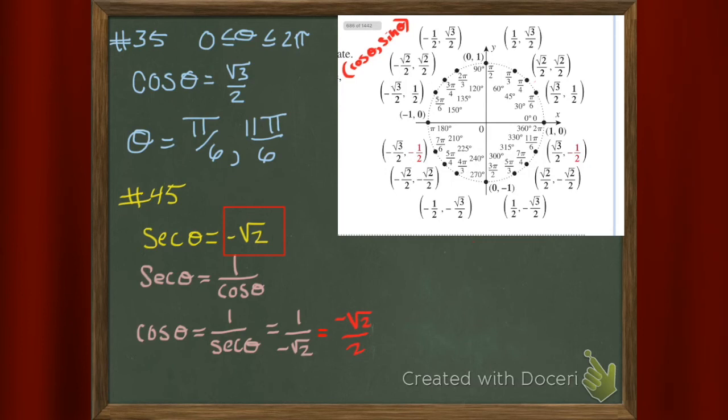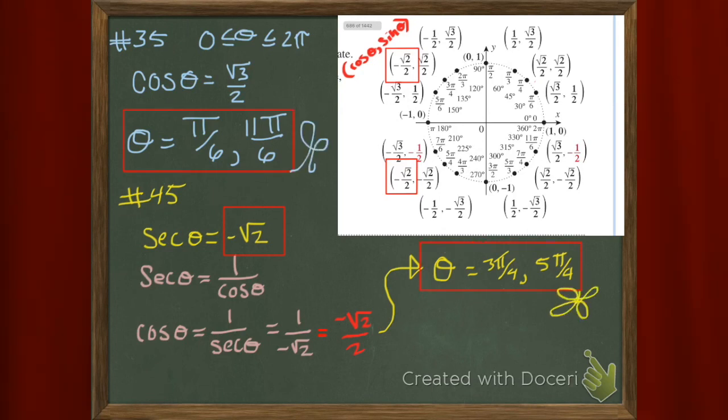Cosine is x. So I'm going to go find where my x's are minus root 2 over 2. Look at my x's. So it's 3 pi over 4 and 5 pi over 4. And it's all over.